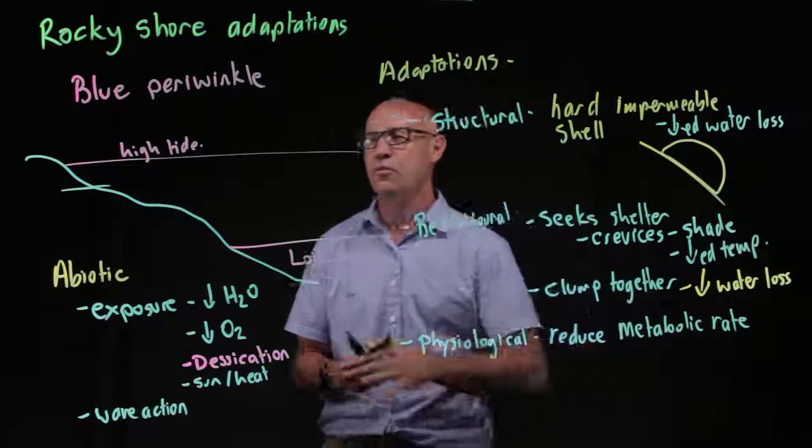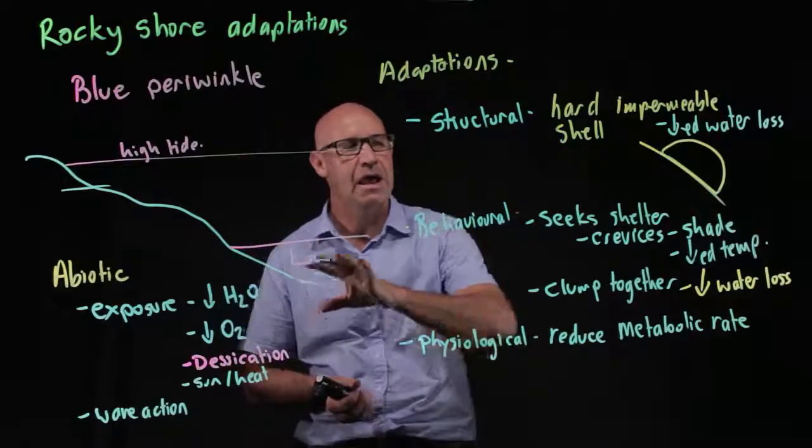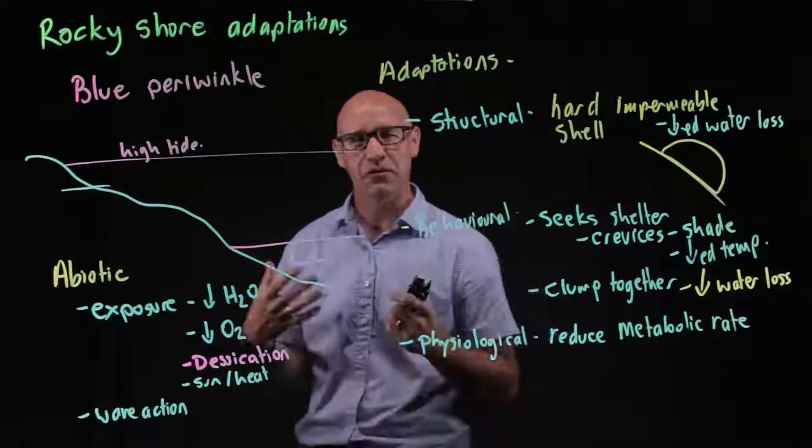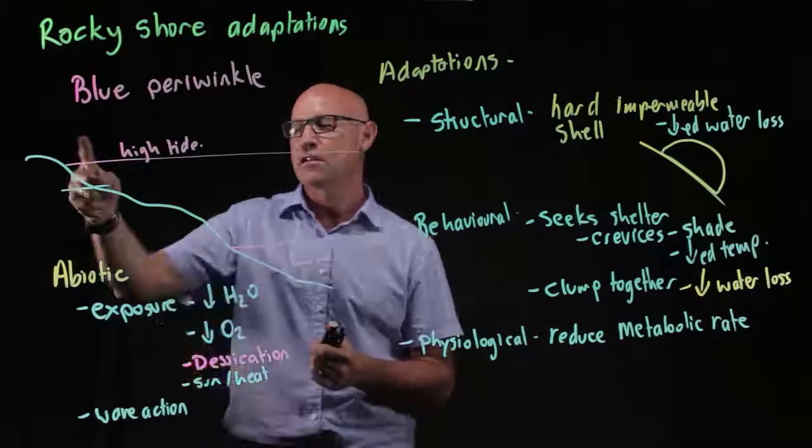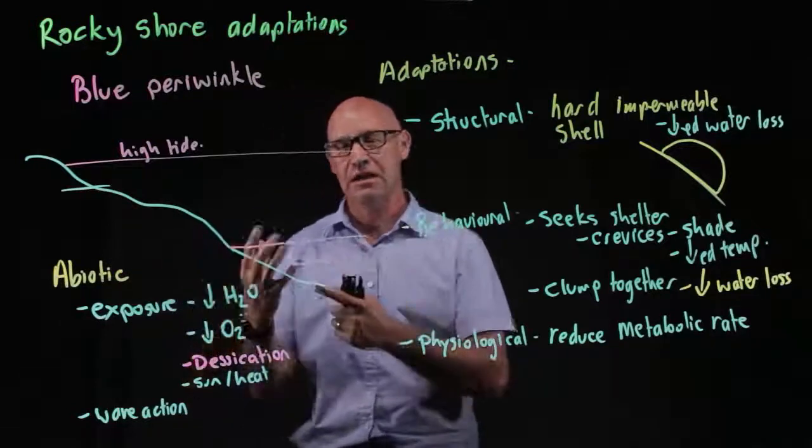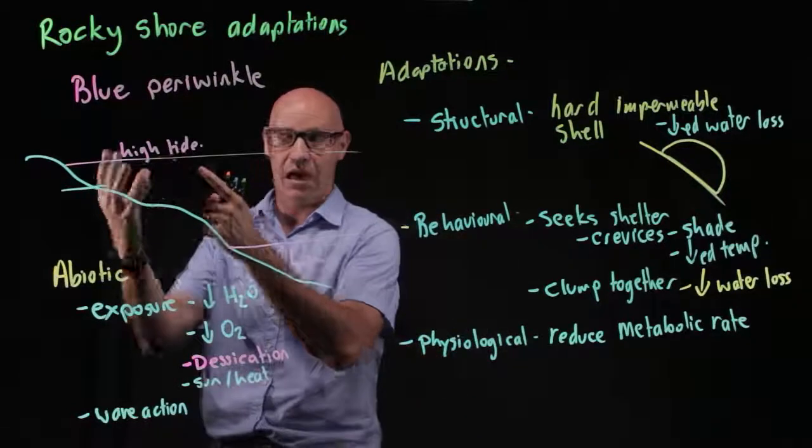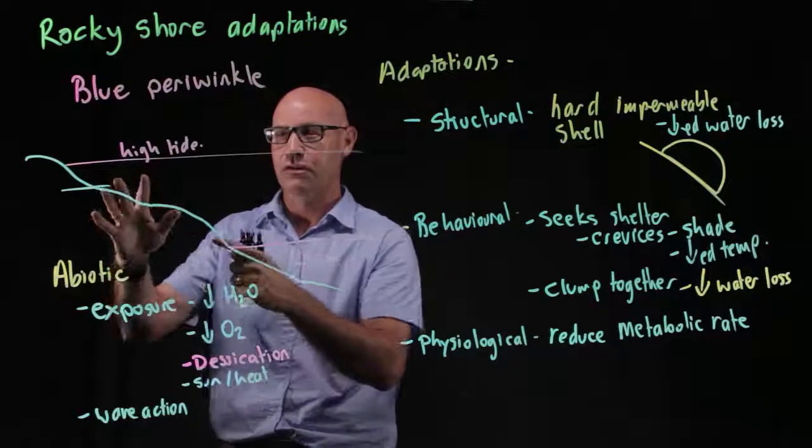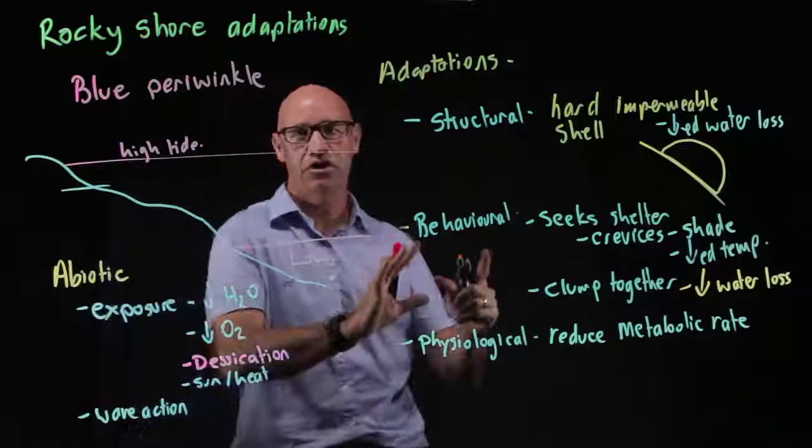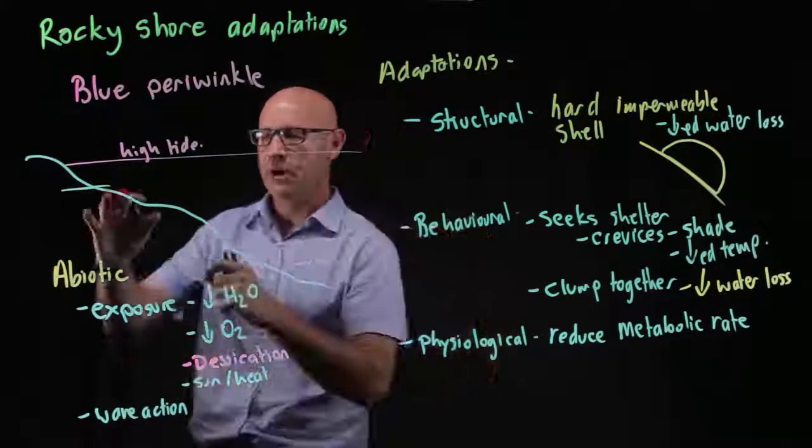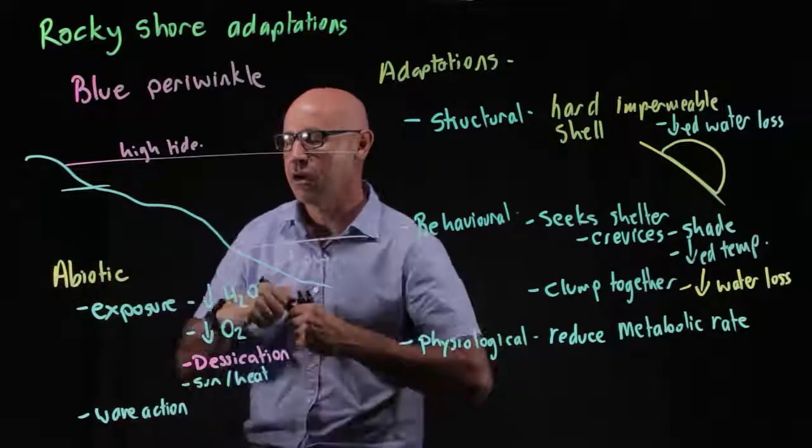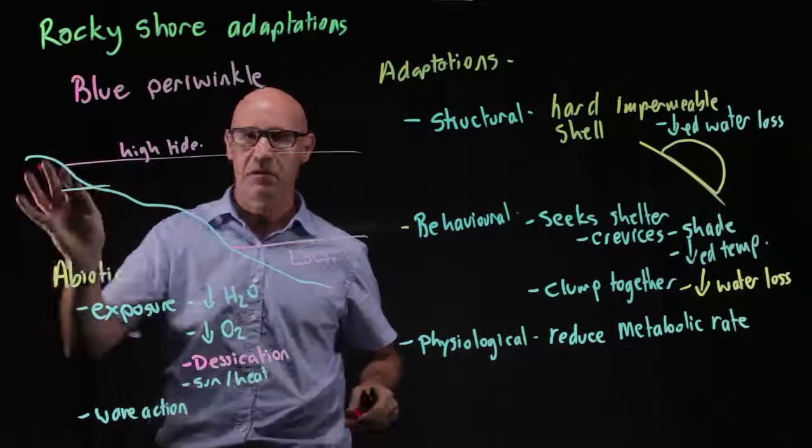This is just one organism on the rocky shore, and it's got a whole series of adaptations to cope with and tolerate living in this area. Its job is to eat and keep down the algae and lichen on the rocks. The adaptations of our blue periwinkle allow it to live in this area here. Now, think about niche again.